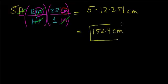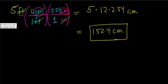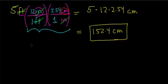The difference between this method and the previous one is that I separated the previous method into two separate steps, whereas in this problem I put both conversion steps together at once. We'll do one more example like this.